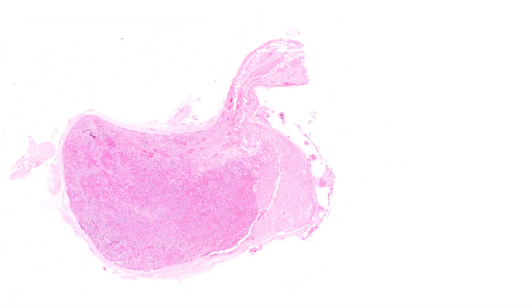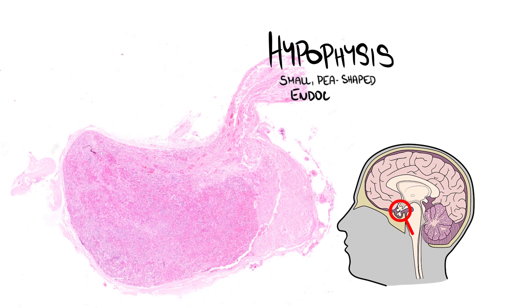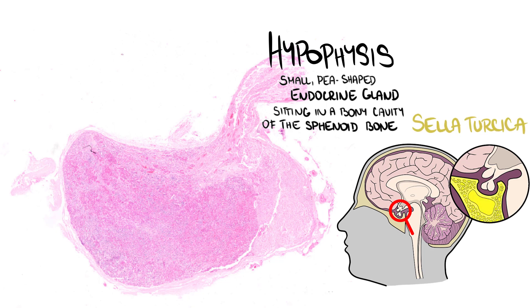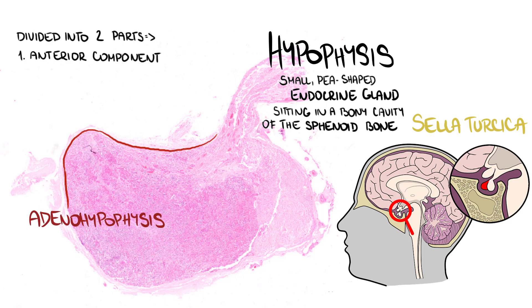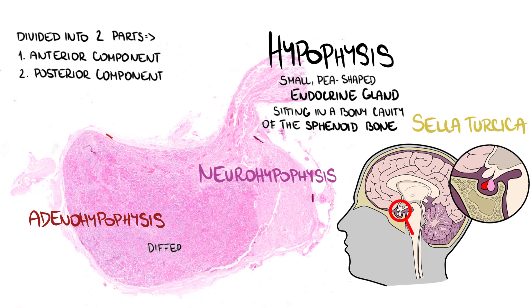The pituitary gland, or hypophysis, is a small, P-shaped endocrine gland sitting in a bony cavity of the sphenoid bone called sella turcica. It's divided into two parts: the anterior component called adenohypophysis and the posterior one called neurohypophysis. These parts are united anatomically but have different embryological origins, control mechanisms, and functions.